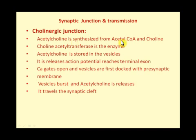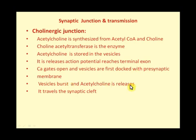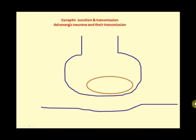In summary: acetylcholine is synthesized from acetate and choline via choline acetyltransferase (CAT), stored in vesicles, and released upon action potential arrival at the terminal axon, which opens calcium gates and bursts the vesicles. Acetylcholine then travels the presynaptic cleft and attaches to its receptors.